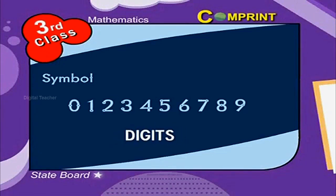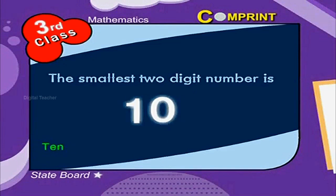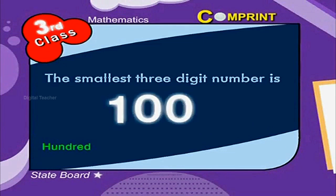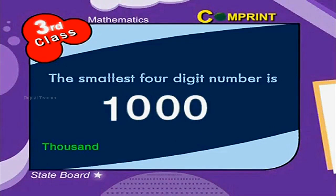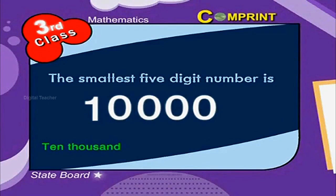Now let us revise the digits already learnt. The smallest 1-digit number is 1. The smallest 2-digit number is 10. The smallest 3-digit number is 100. The smallest 4-digit number is 1,000. The smallest 5-digit number is 10,000.